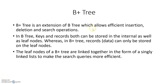Today we will be discussing B+ trees. B+ tree is an extension of B tree which allows us to perform various operations like insertion, deletion, and searching more efficiently. In B+ tree, the records or data can only be stored on the leaf nodes — unlike B trees where data is stored in both internal nodes and leaf nodes. The leaf nodes are linked together in the form of a singly linked list, which makes search operations more efficient.